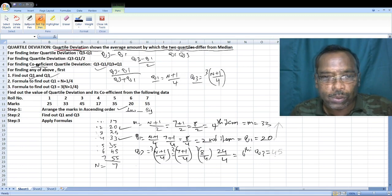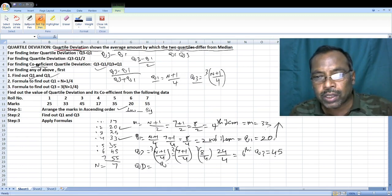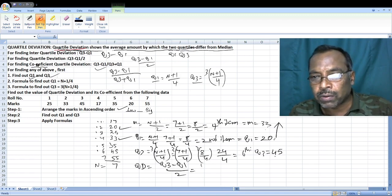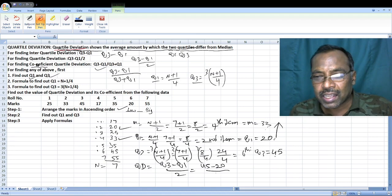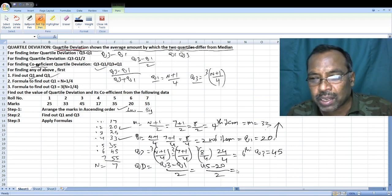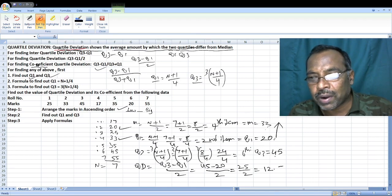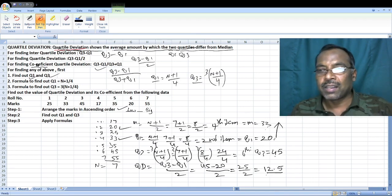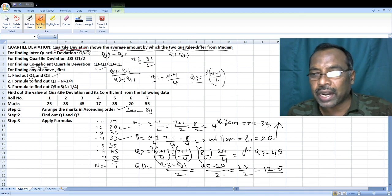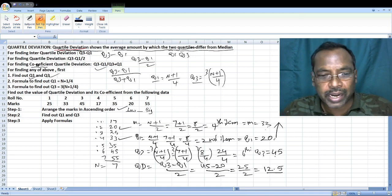Now let us find quartile deviation. What is quartile deviation? Q3 minus Q1 by 2. That comes to 45 minus 20 divided by 2, which is 25 by 2, equals 12.5. This is the quartile deviation.